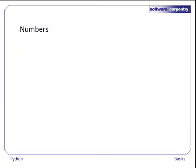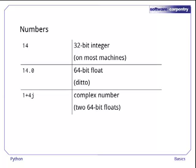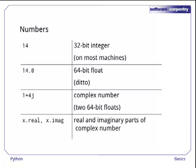And speaking of numbers, Python provides several types. The simplest are integers, which on most machines are stored in 32 bits, though 64-bit machines are now becoming common. Python also provides floating point numbers, which are usually stored in 64 bits, and complex numbers, which are written using j for the imaginary part and are stored in a pair of 64-bit numbers. If x is a complex number, then x.real and x.imag are its real and imaginary parts.